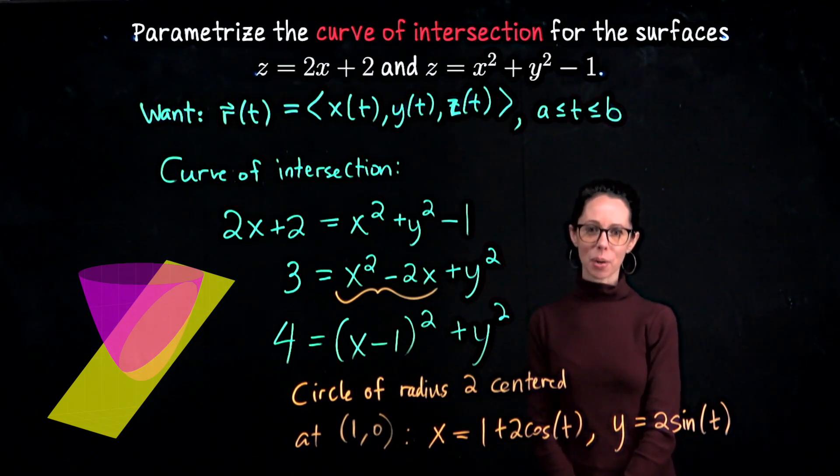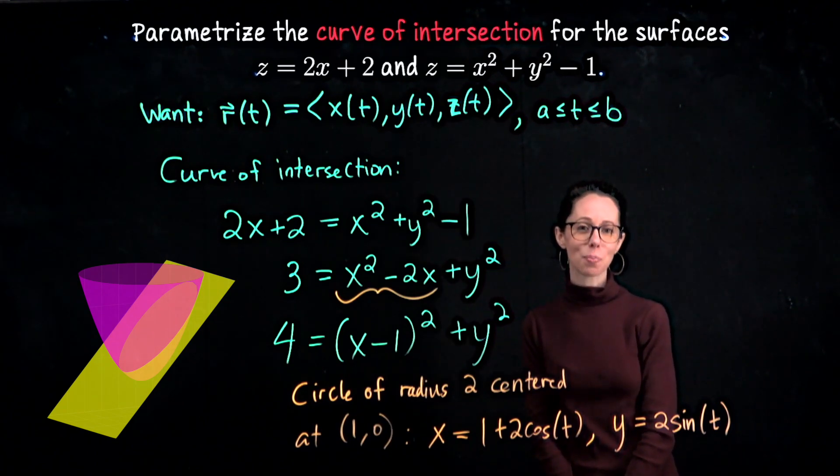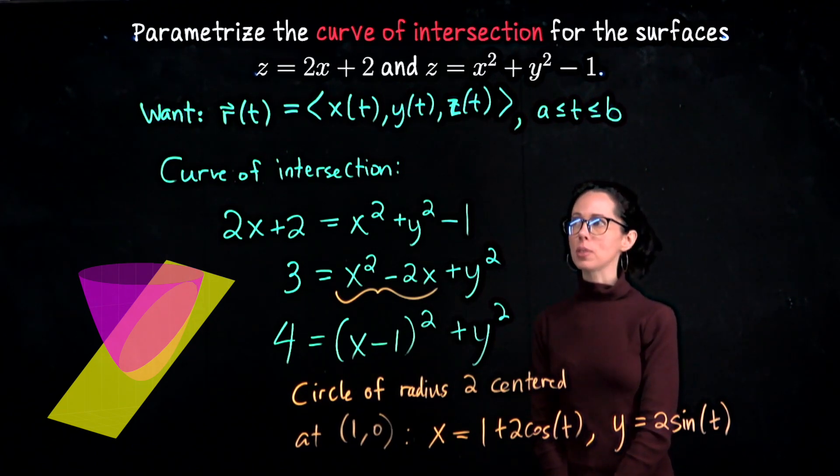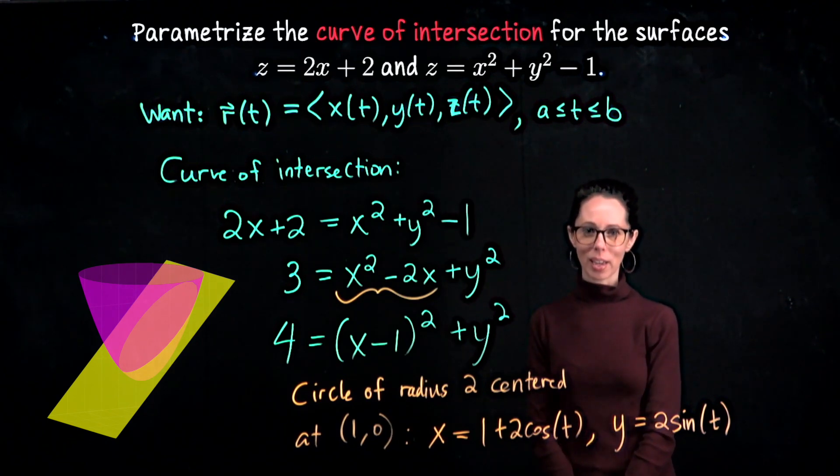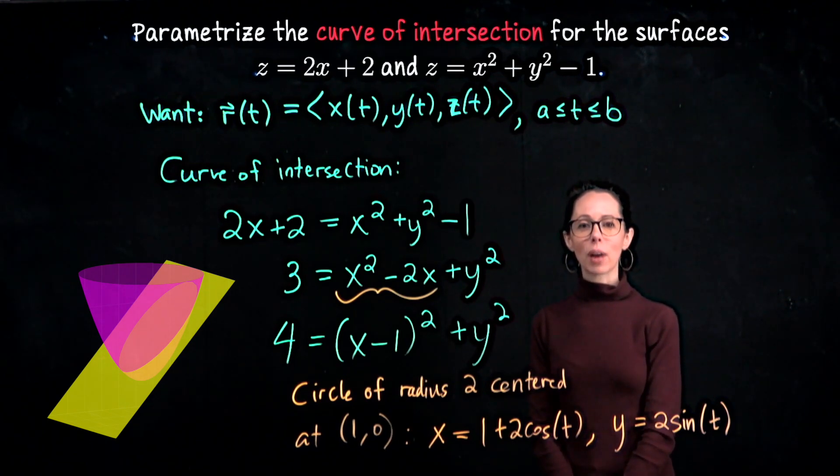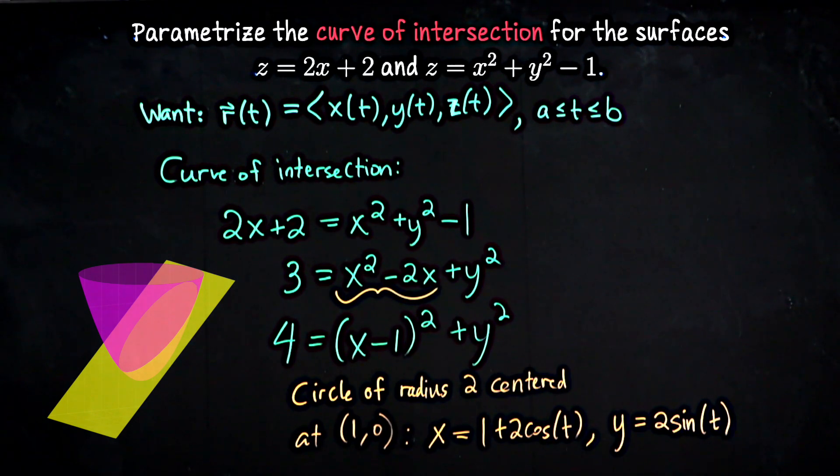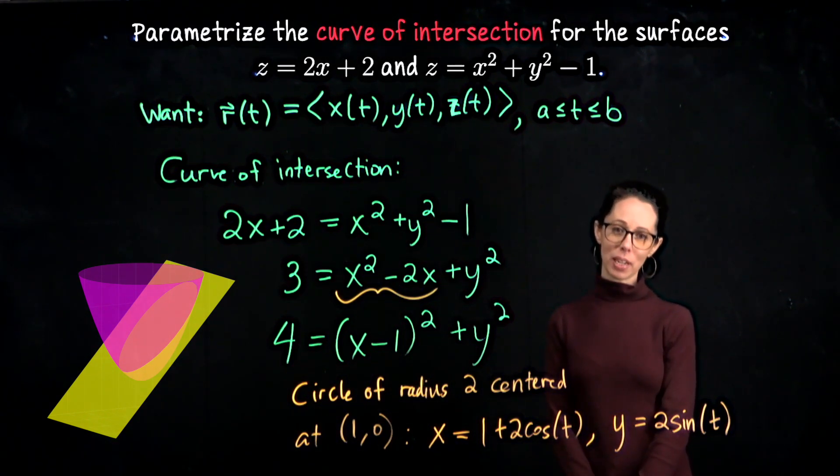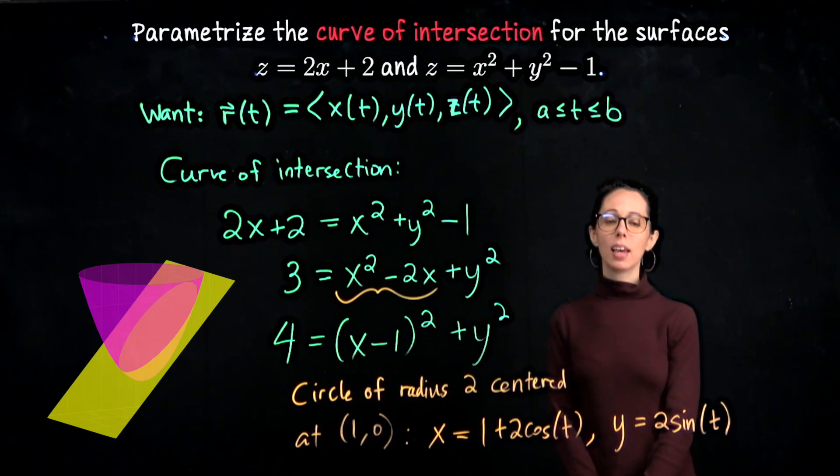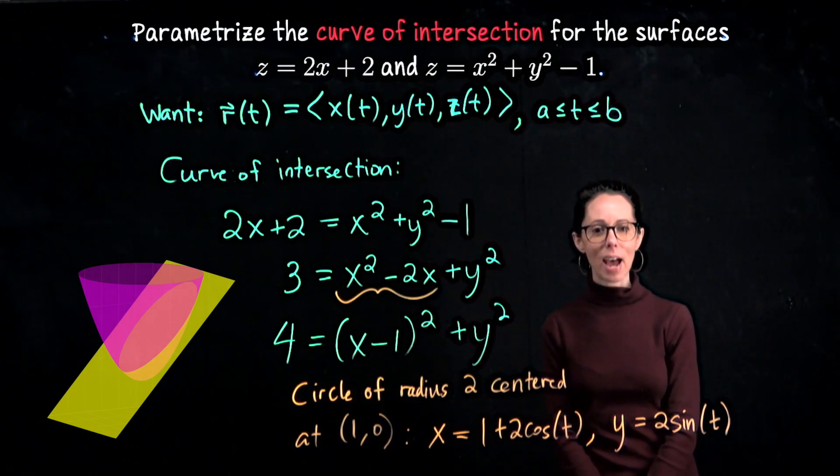We need to describe z in terms of t. We have z characterized in terms of x and y two different ways. Both would land us on the curve of intersection. So z equals 2x plus 2, but also z equals x squared plus y squared minus 1. Take a moment to decide which of these two equations you would like to work with, and then see if you can write down a nice expression for z in terms of t. I think the plane equation will give us the most immediate expression for z in terms of t. z is twice the x coordinate plus 2. Well, this is the x coordinate, so let's double it and add 2.